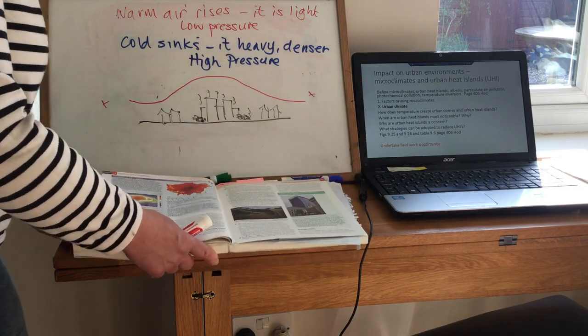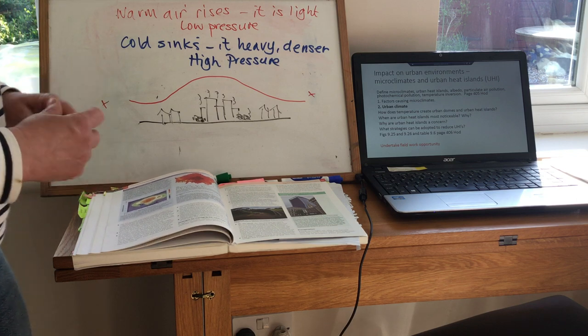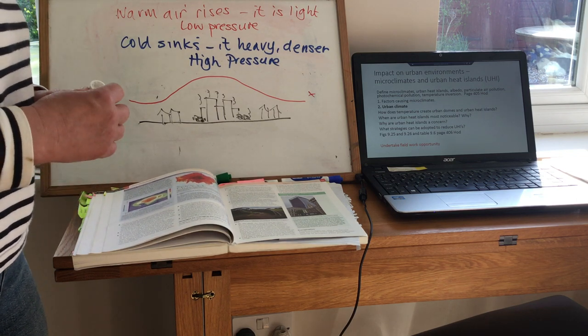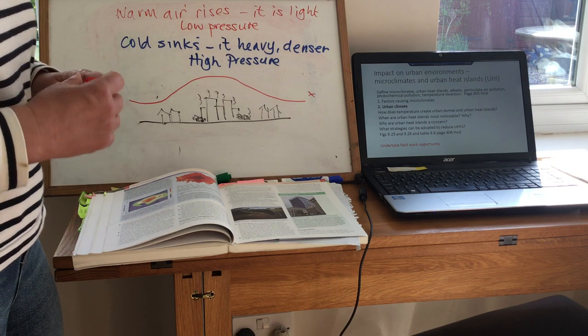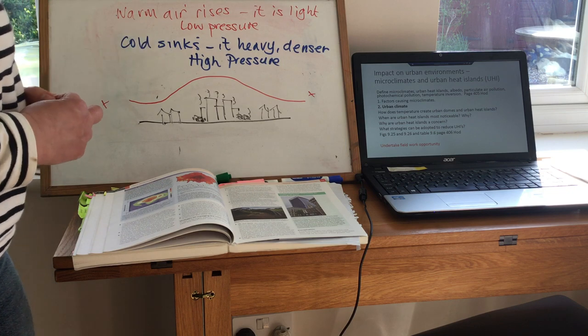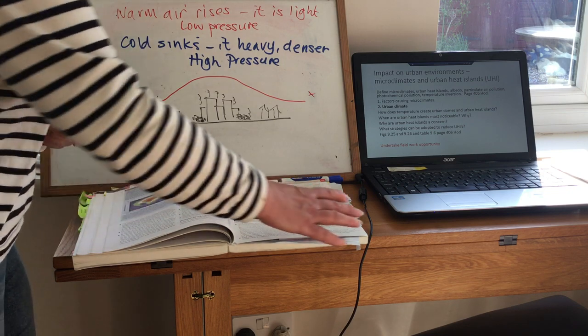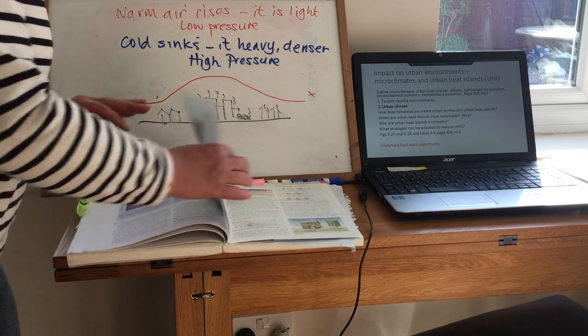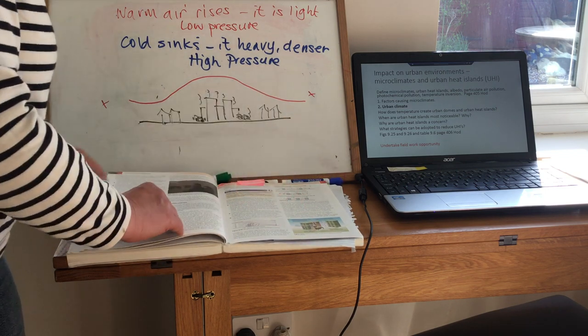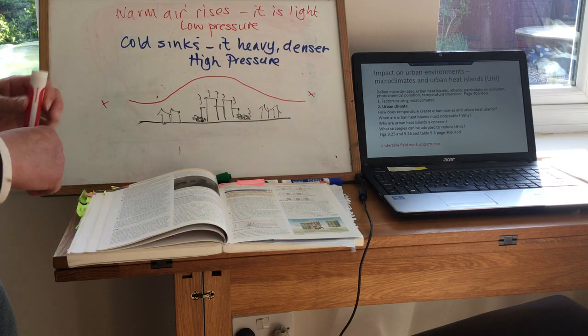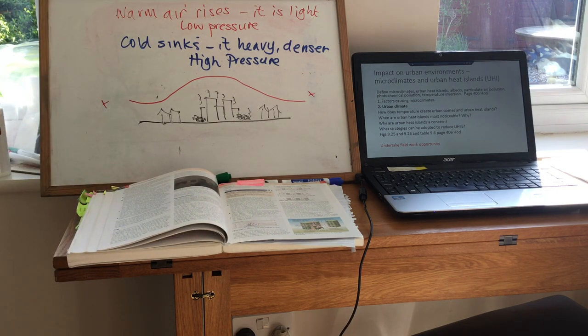Urban heat islands do cause a problem. They can cause problems to the physical fabric of the city, but they can also cause problems to human health. They also cause problems to traditional vegetation patterns. So I'm hoping that you have read and understood all that on page 408, 409 and on to 410. Thank you.